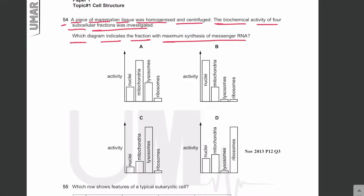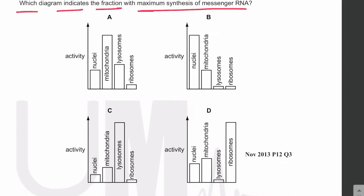They took mammalian tissue — that is, tissue containing animal cells — and homogenized and centrifuged it, separating the organelles. They are investigating the activity in the organelles, specifically the synthesis of messenger RNA. Which graph is correct for mRNA synthesis? Wherever there is DNA, messenger RNA is also formed.